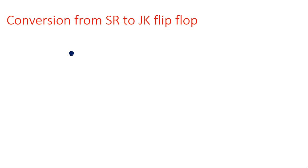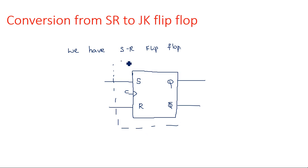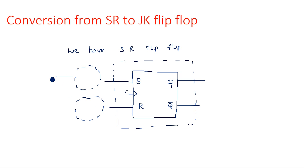We have an SR flip-flop, and this SR flip-flop should work as a JK flip-flop. For that we need to convert the SR flip-flop behavior into JK flip-flop behavior, but internally it should run as SR flip-flop. So internally we have SR flip-flop with inputs S and R and outputs Q and Q-bar. The behavior is changed by applying extra circuitry whose inputs are J and K.